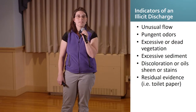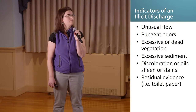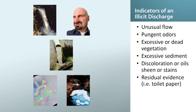What are some of the indicators of an illicit discharge at an outfall? Unusual flow is a very big indicator and one of the hardest to assess, because you could have a discharge without any pollutants — for example, uncontaminated groundwater flowing from your outfall during dry weather — which is a first sign that you want to investigate further. Other indicators include pungent or rotten egg odors, excessive or dead vegetation, excessive sediment, discoloration or oils, or residual evidence such as toilet paper.